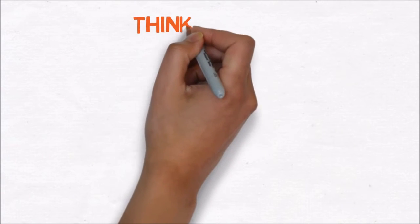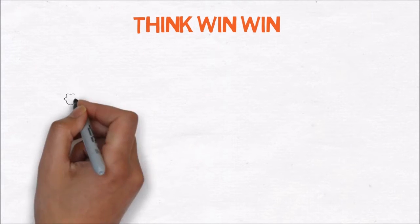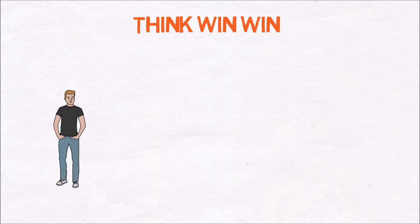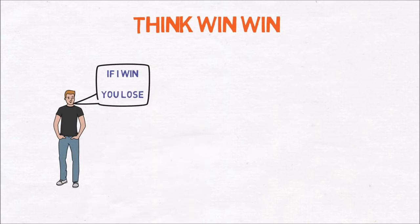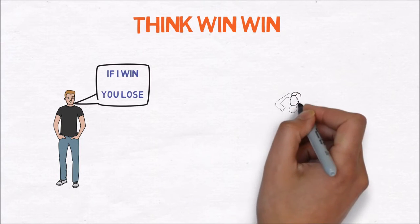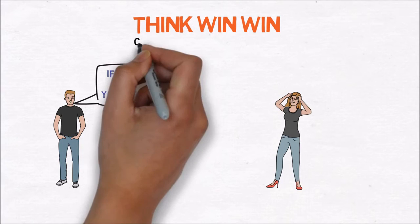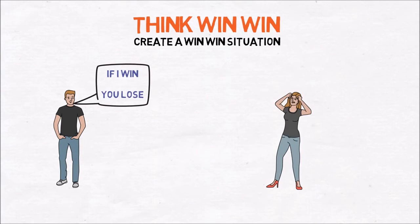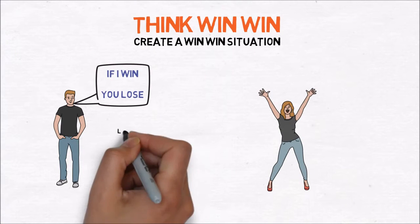The fourth lesson is to think win-win. Most people think in a win-lose situation. If I win, you lose. Only one person gets what he or she wants for the moment. However, this situation will affect the relationship between those two people in a negative way. That's why the best option is to create a win-win situation. This way you can create long-term sustainable relationships that are beneficial and satisfying for both people.